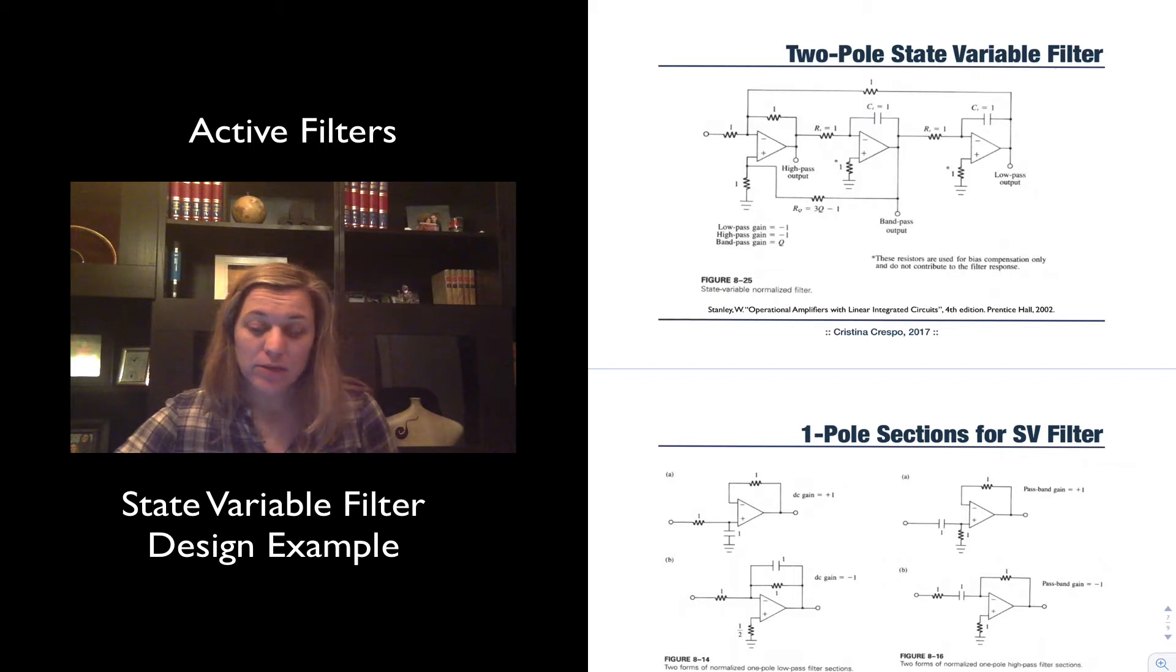Here is the schematic for the normalized version of the two-pole State Variable Filter. You can see it consists of three op-amps, and as I mentioned, if you take the output out of the first op-amp, you will get a high-pass filter type of response. If you get it at the end of the third op-amp, you will get a low-pass filter, and if you get it in the middle, you will get the band-pass filter.